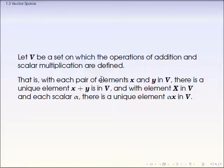Then the addition must be a binary operation in the set. So for any two elements in V, the sum must be a unique element in the set. And we need any arbitrary element x in V, which should be small x, not capital, and any scalar number α. Then the product must be a unique element in the set again.